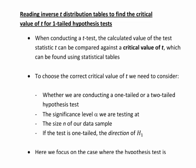First of all, whether it is indeed a one-tailed hypothesis test or whether it is two-tailed. We also need to consider the significance level alpha that we are testing at. We need to look at the sample size n. And if the T test is one-tailed, as in these examples, we need to consider the direction of the alternative hypothesis H1.